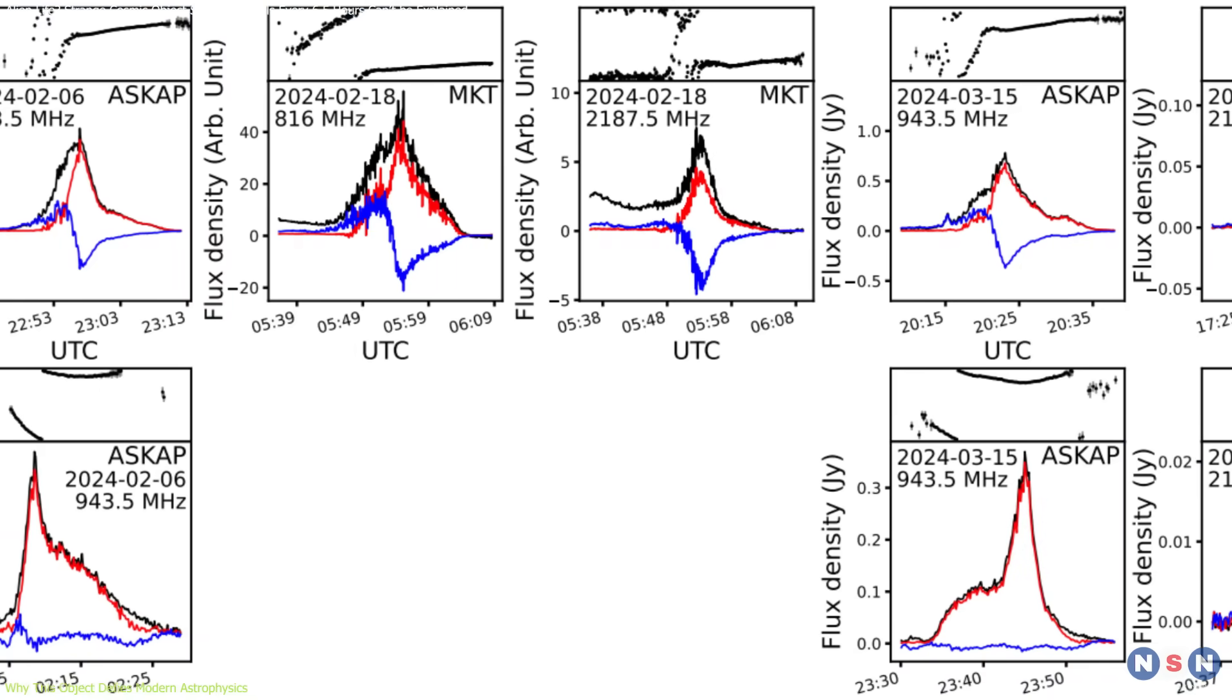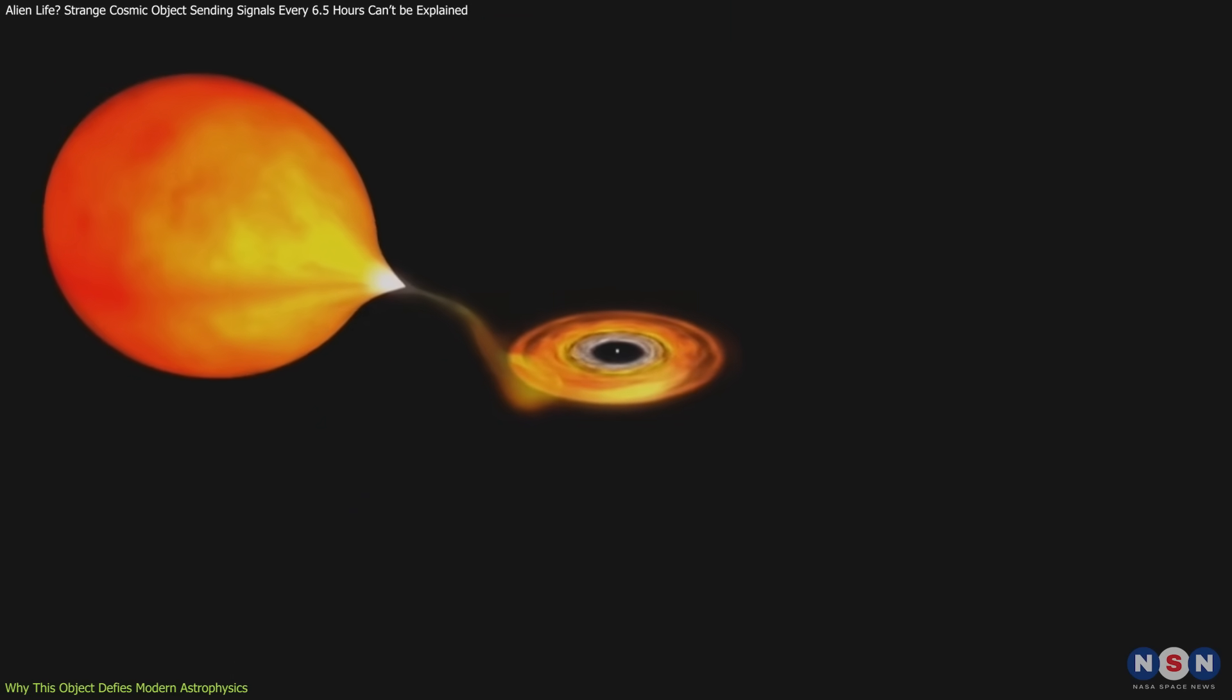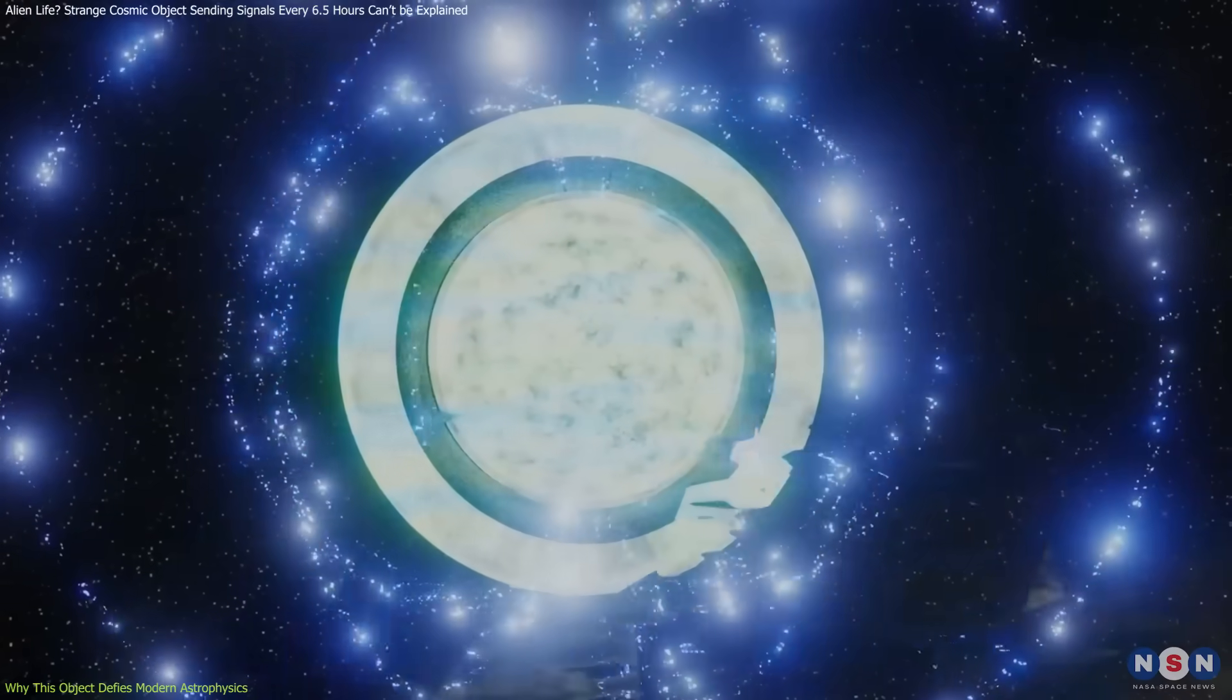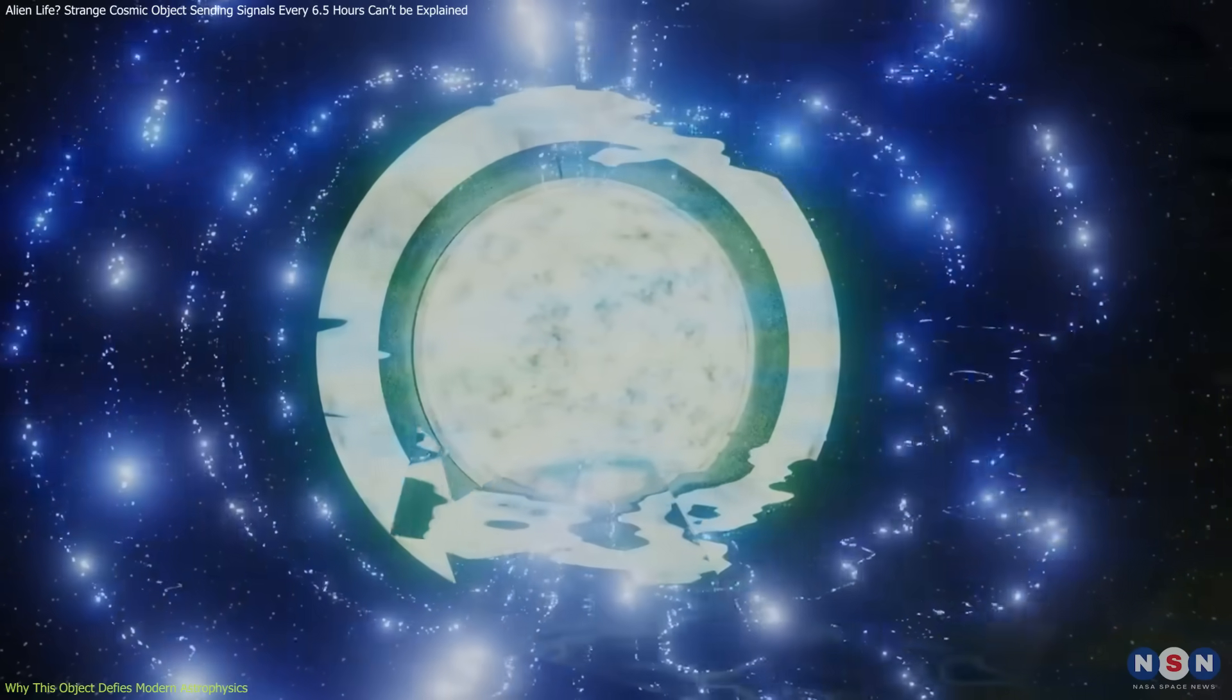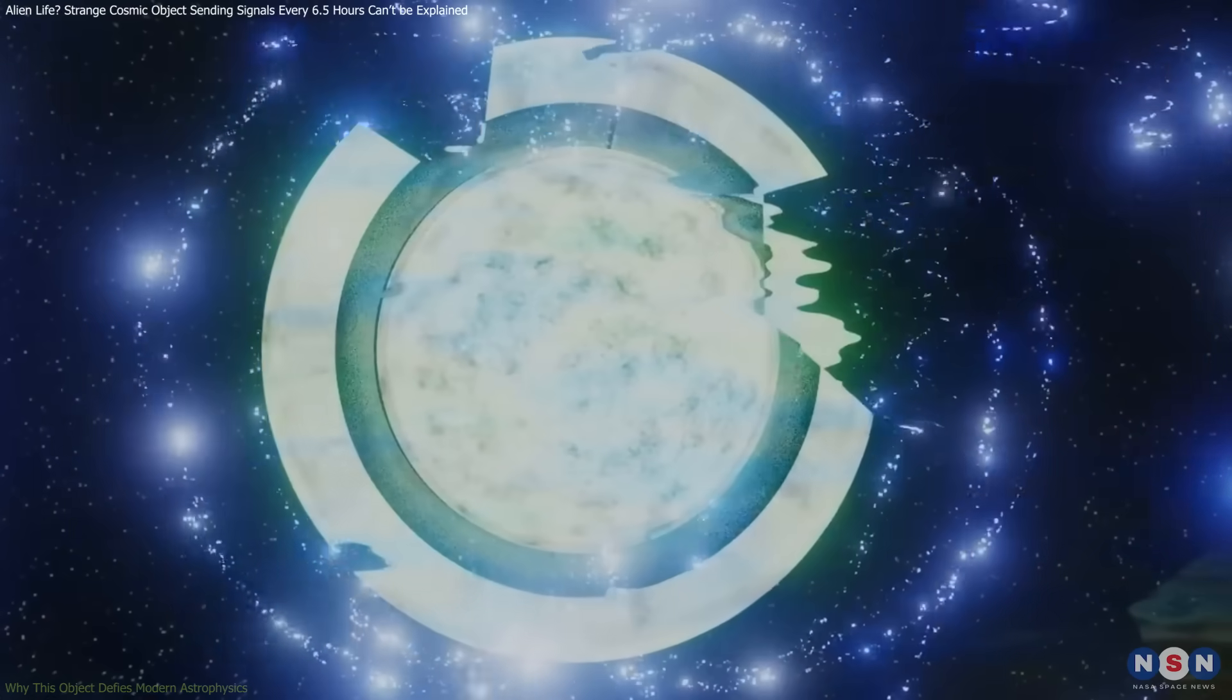However, with such a long rotation period, the available energy should be too weak to sustain its emissions. Another theory suggests that this object might be a magnetar, a type of neutron star with an extremely powerful magnetic field, thousands of times stronger than a typical pulsar.